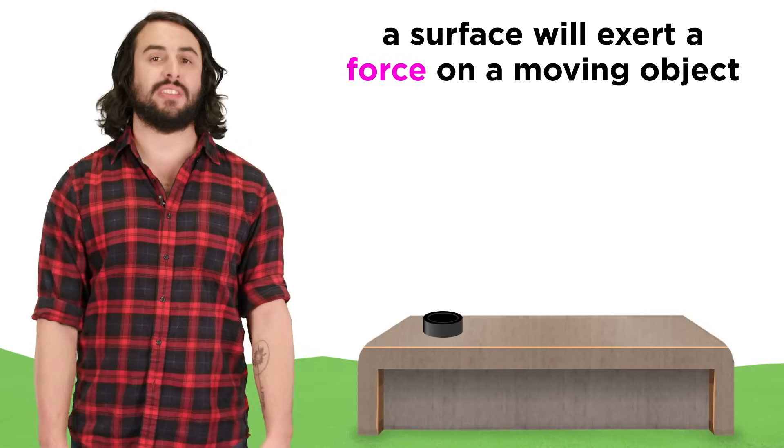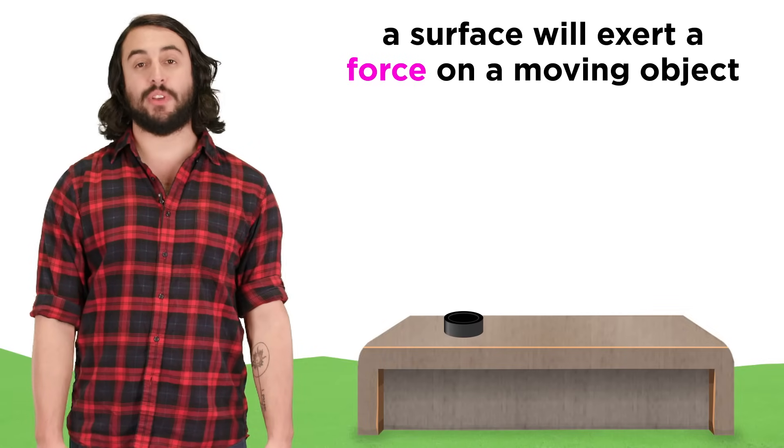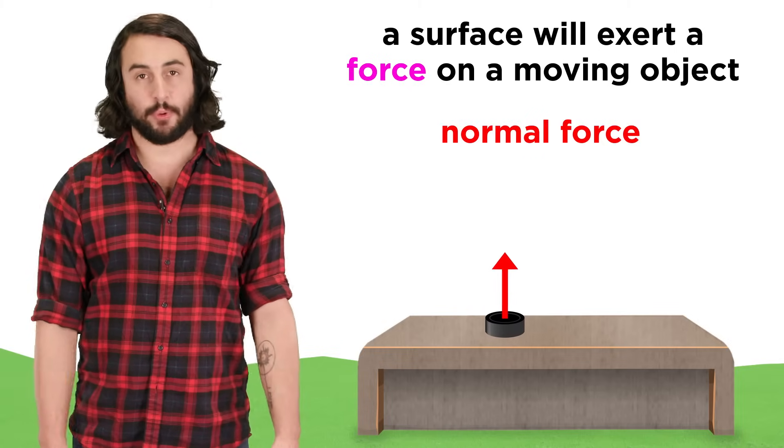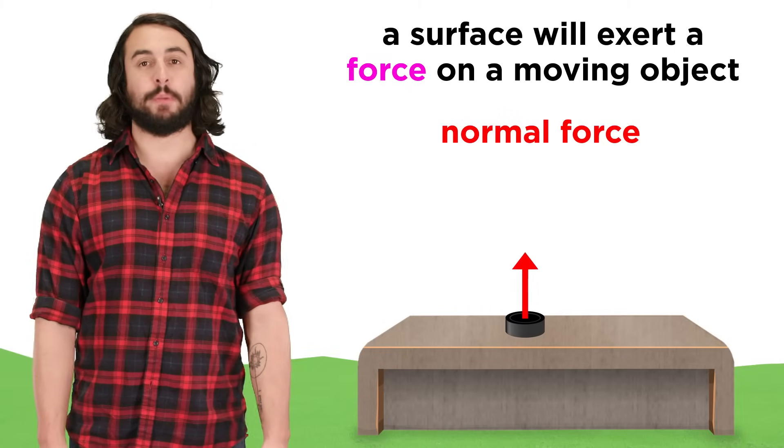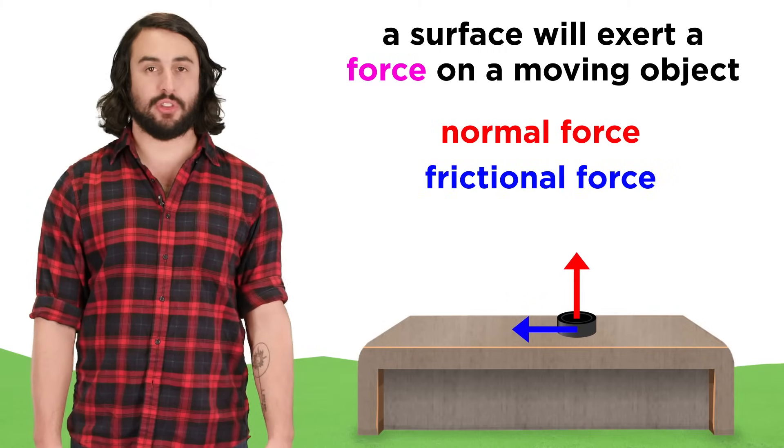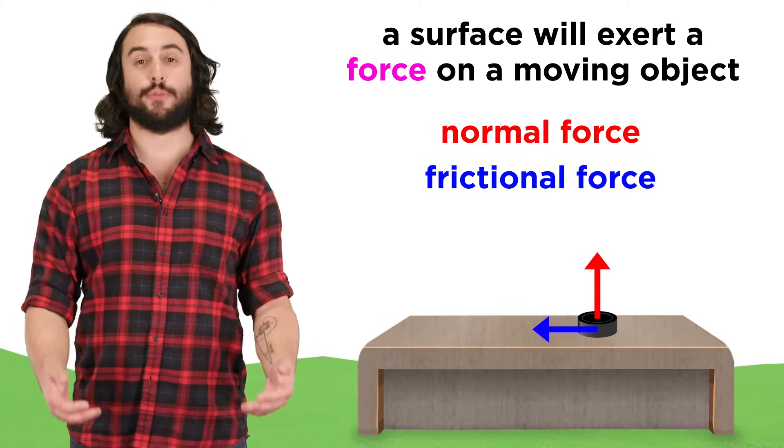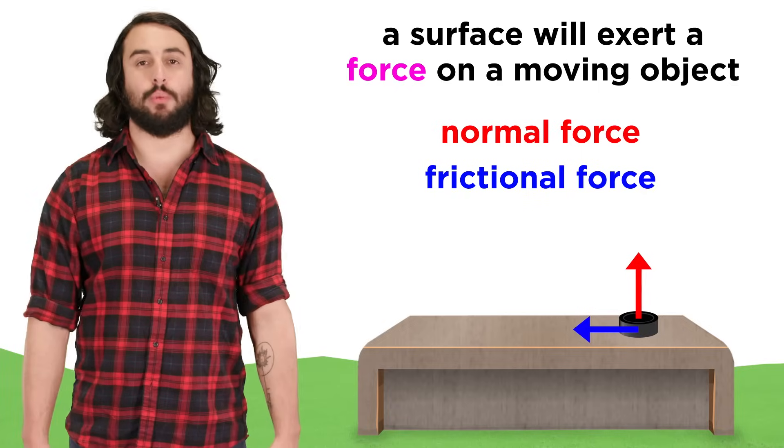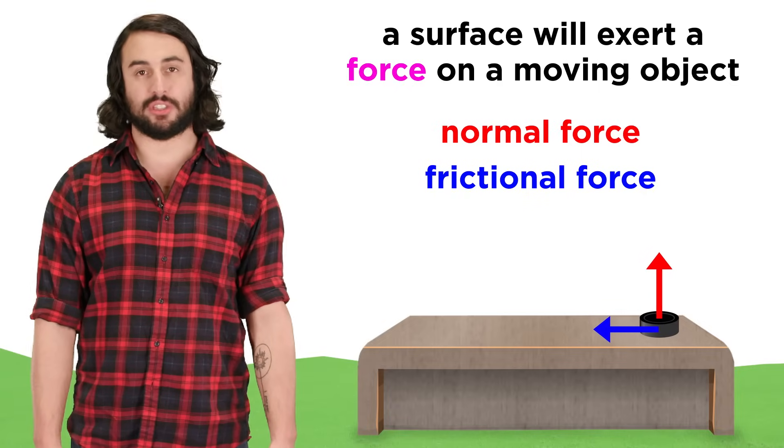Whenever an object is in motion along a surface, the surface exerts a force upon the object. One component of this force is the normal force, which is perpendicular to the surface. There is also a component of this force that is parallel to the surface, and this is called the frictional force, or simply friction. This is the force that will resist the motion of the object along the surface.